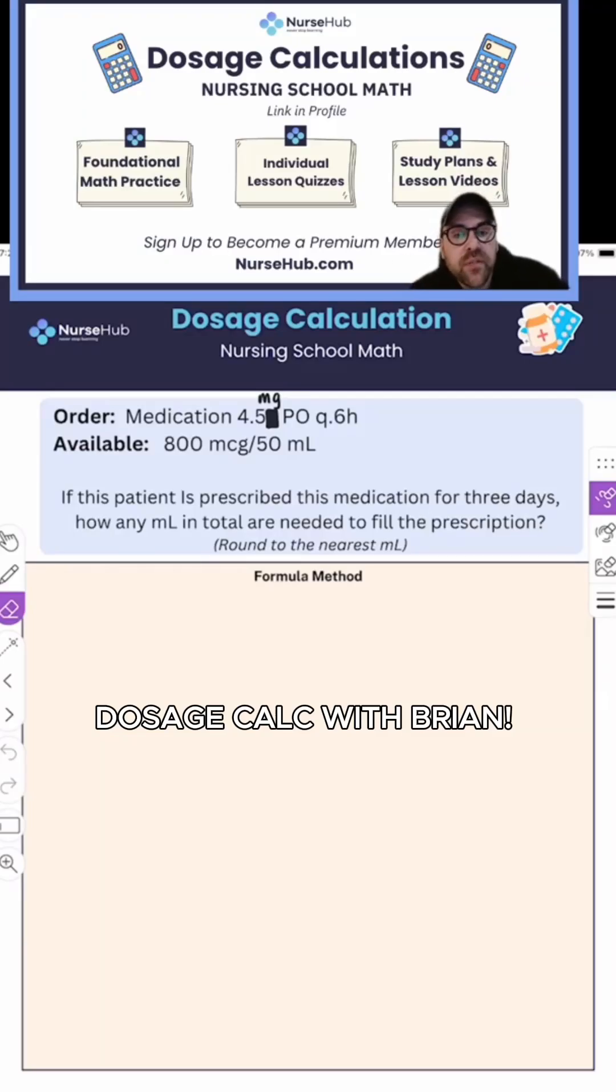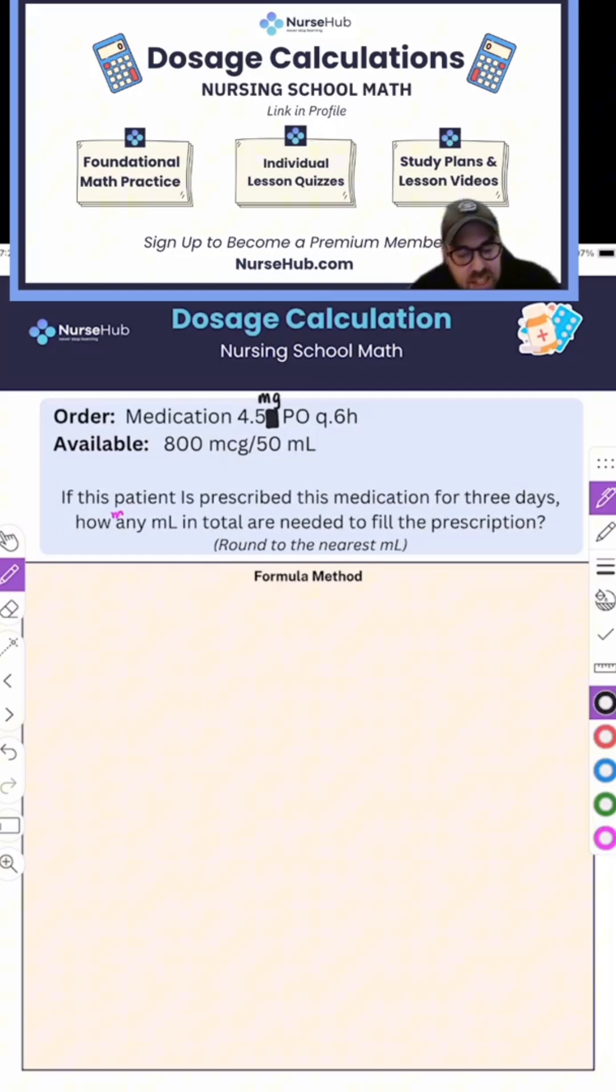Our order for medication is 4.5 milligrams PO Q6H. What's available? 800 micrograms per 50 milliliters. If this patient is prescribed this medication for three days, how many milliliters are needed to fill the prescription? We're going to round to the nearest milliliter.